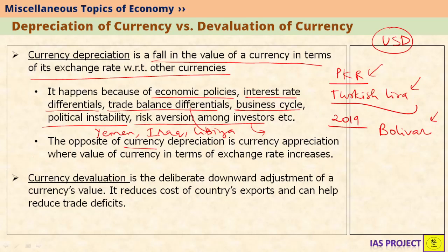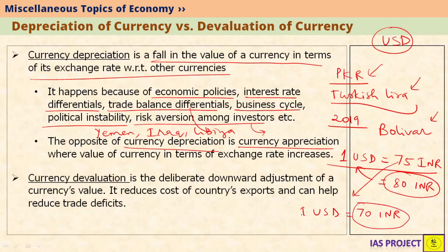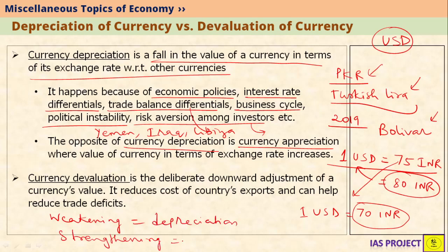The opposite of currency depreciation is currency appreciation, which simply means the value of a currency increases with respect to other currencies. For example, if 1 US dollar equals 75 Indian rupees and later becomes 80 Indian rupees, then the Indian rupee has depreciated against the US dollar. However, if the rate moves from 75 INR to 70 INR per dollar, the rupee has strengthened against the US dollar — this strengthening is called appreciation of the rupee. So weakening is depreciation and strengthening is appreciation.